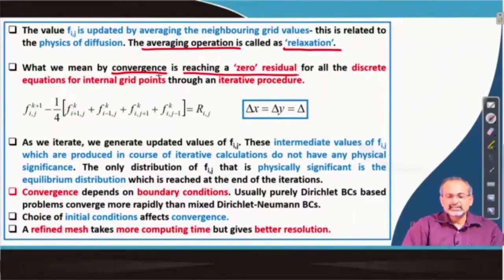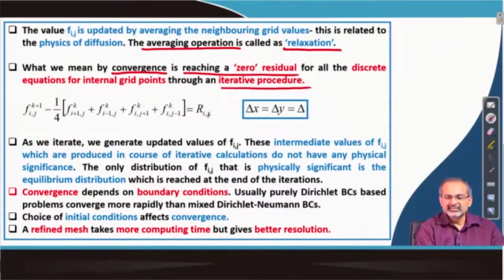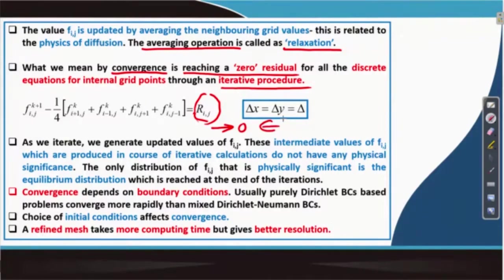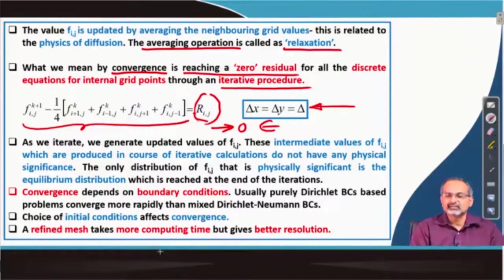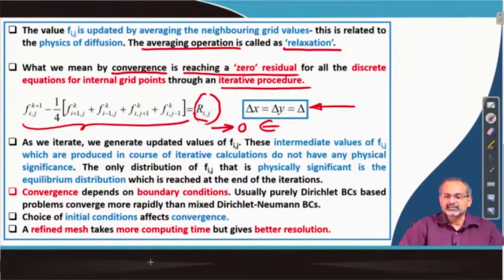When we lay down the discrete equation for all internal grid points and iterate the value of Fij at each i and j in an iterative manner, we are trying to set the residual to zero or a very small epsilon before stopping the computation. All these equations work on the basis that grid spacings along the two directions are equal. Going forward, unless otherwise specified, we will assume that grid spacings along the different Cartesian directions are equal, which significantly simplifies the governing equation.